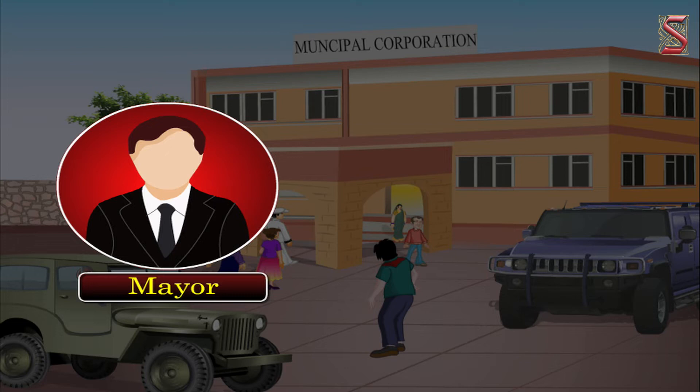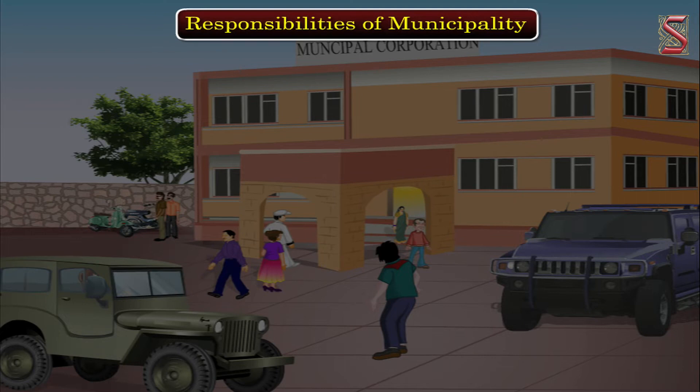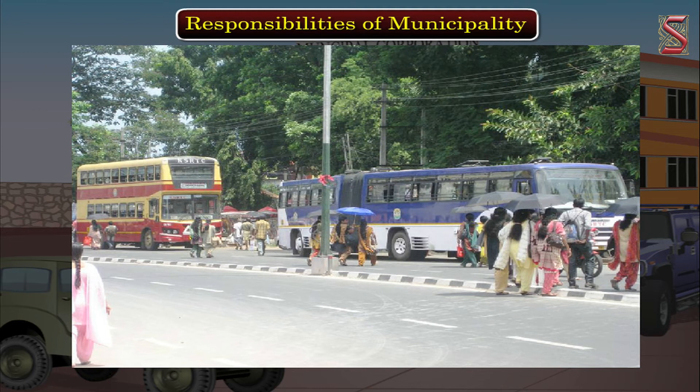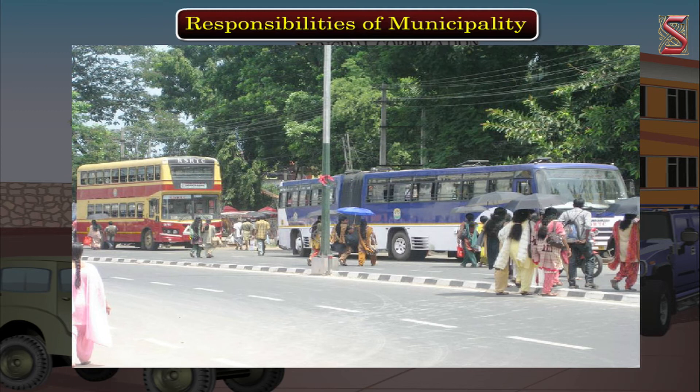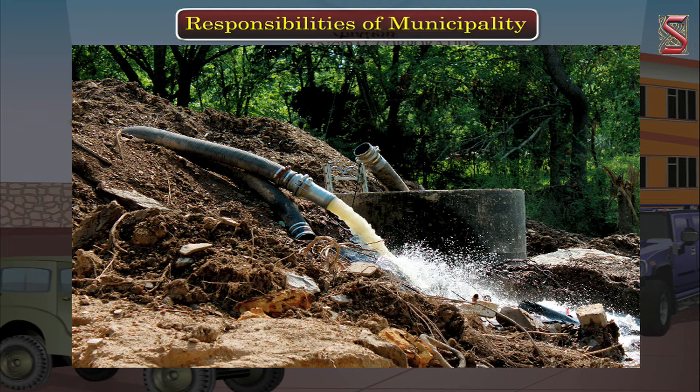A Mayor serves as the theoretical head of state of a municipal corporation, while the real power lies in the hands of the Municipal Commissioner. Responsibilities of the municipality include: roads, public transportation, water supply, records of births and deaths, sanitation (including waste management, sewage, drainage, and flood control), public safety services, and maintenance of gardens and government buildings.